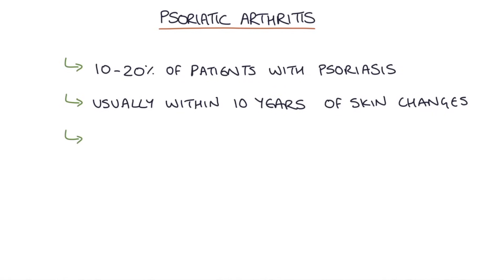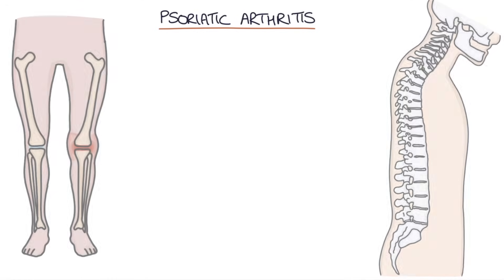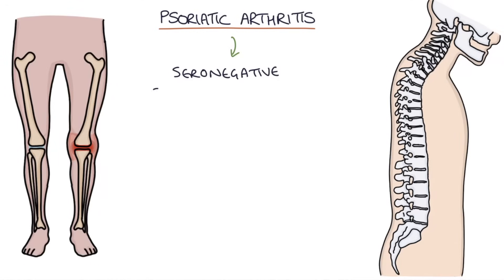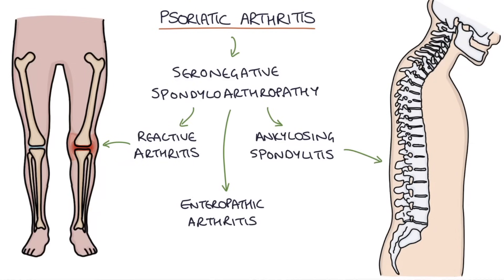It typically affects people in middle age, but it can occur at any age. It's part of the group of conditions called seronegative spondyloarthropathy, which includes seronegative inflammatory arthritides like reactive arthritis, ankylosing spondylitis, and enteropathic arthritis.